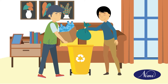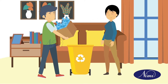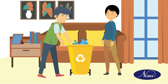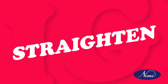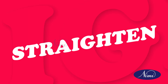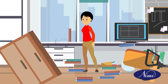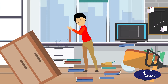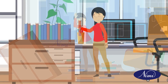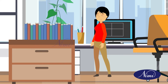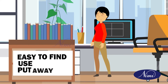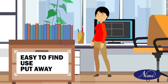Sort, the first S, focuses on eliminating unnecessary items from the workplace that are not needed for current production operations. The second S, straighten or set in order, focuses on creating efficient and effective storage methods to arrange items in the correct place so that they are easy to find, use, and put away.